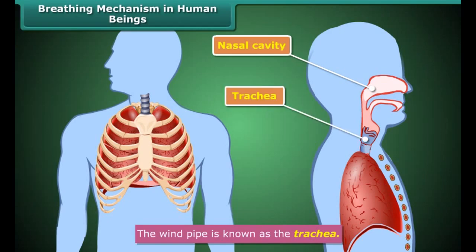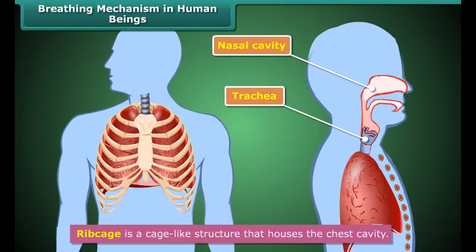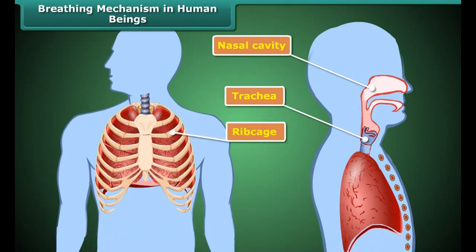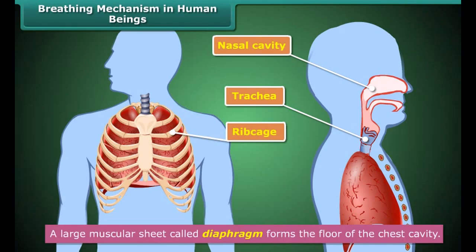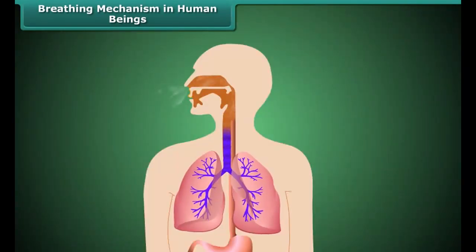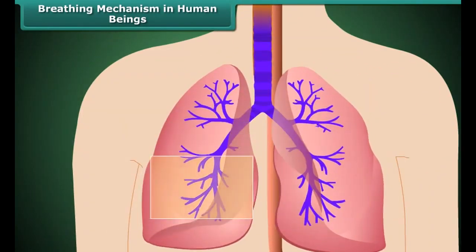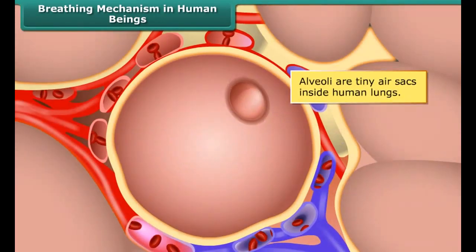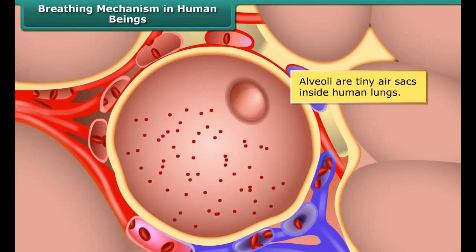From the nasal cavity, the inhaled air passes down the throat and enters the windpipe, known as the trachea. From the trachea it reaches both our lungs, which are present in the chest cavity surrounded by ribs on both sides. These ribs form a cage-like structure called the rib cage. A large muscular sheet called the diaphragm forms the floor of the chest cavity. The rib cage and diaphragm show movements during inhalation and exhalation.